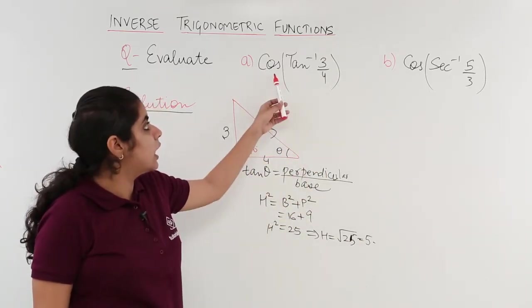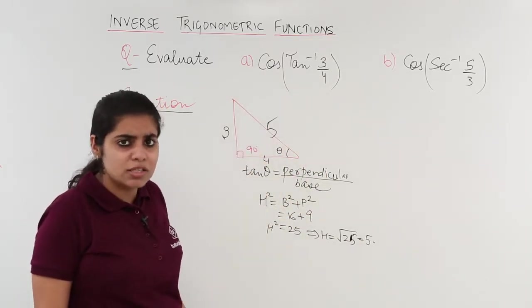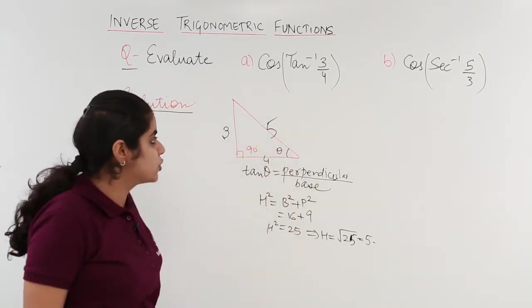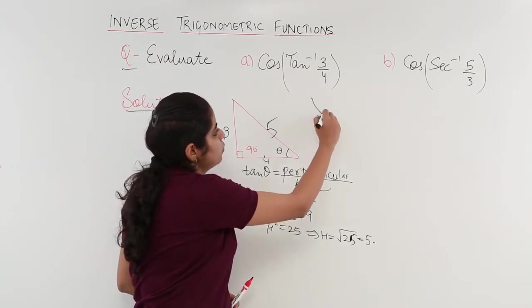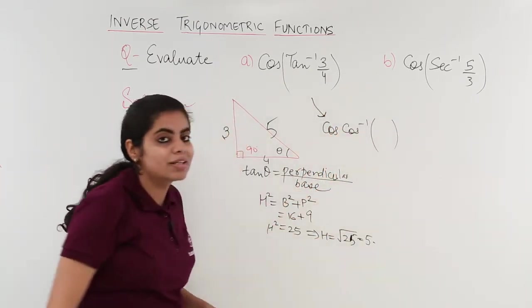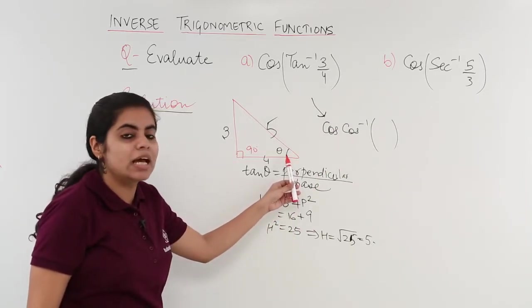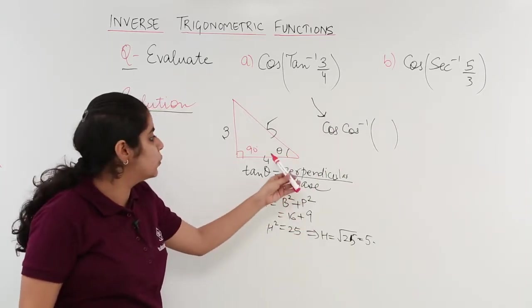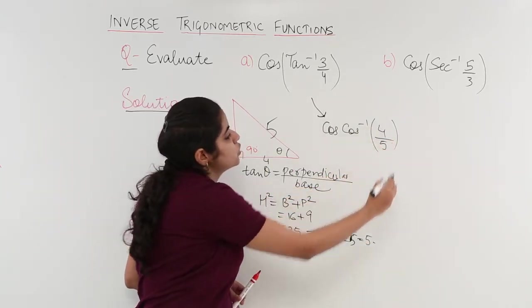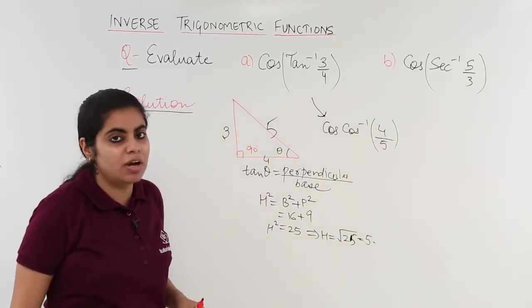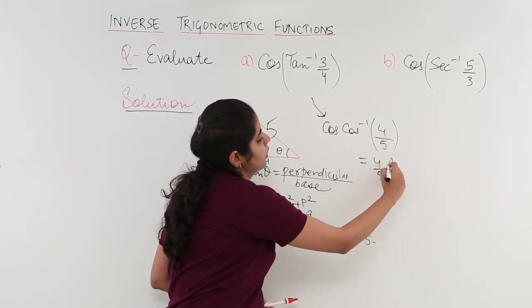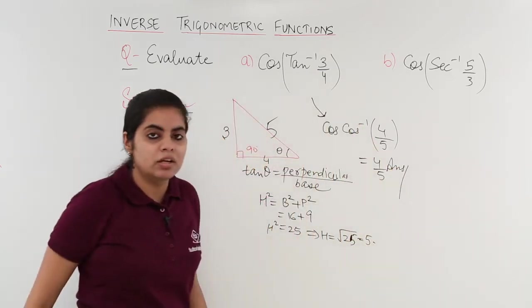What is needed now? We need something called as cos. Cos means base upon hypotenuse. So the question continues: cos here, cos inverse here. What is the base? Base is the side which is inclined and adjacent to theta, so it is 4. What is hypotenuse? Opposite to 90 degrees, it is 5. Cos and cos inverse nullify, answer is 4 upon 5.